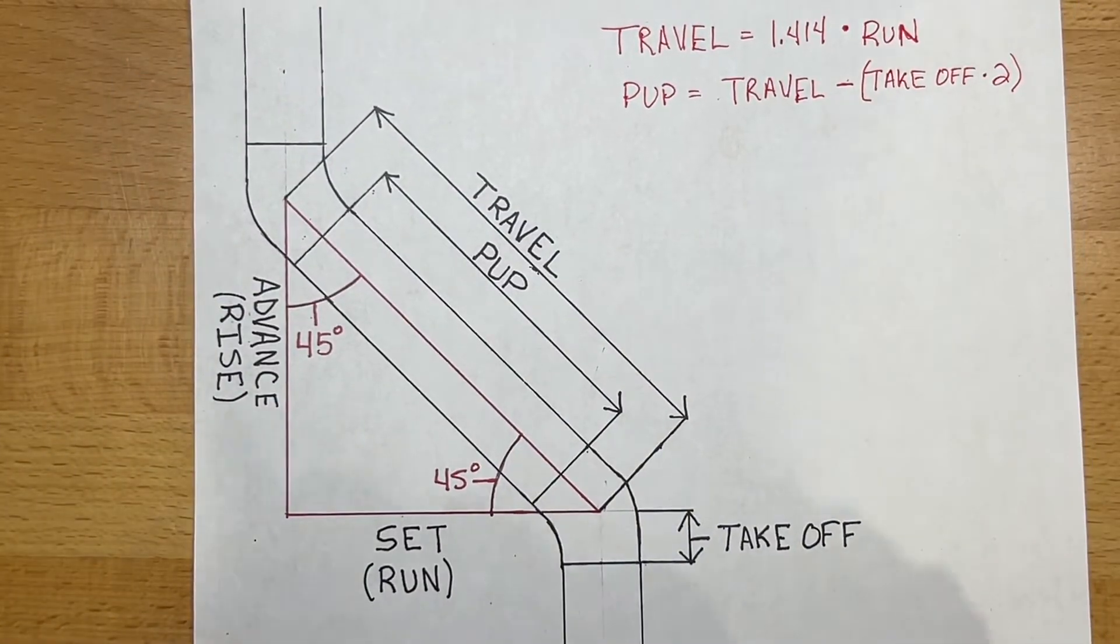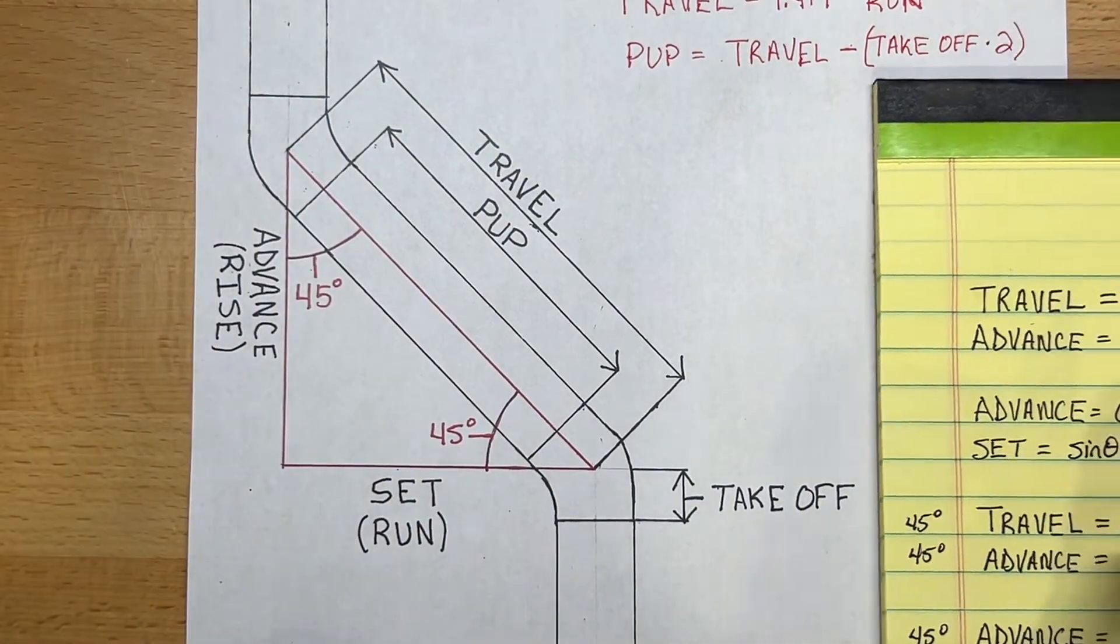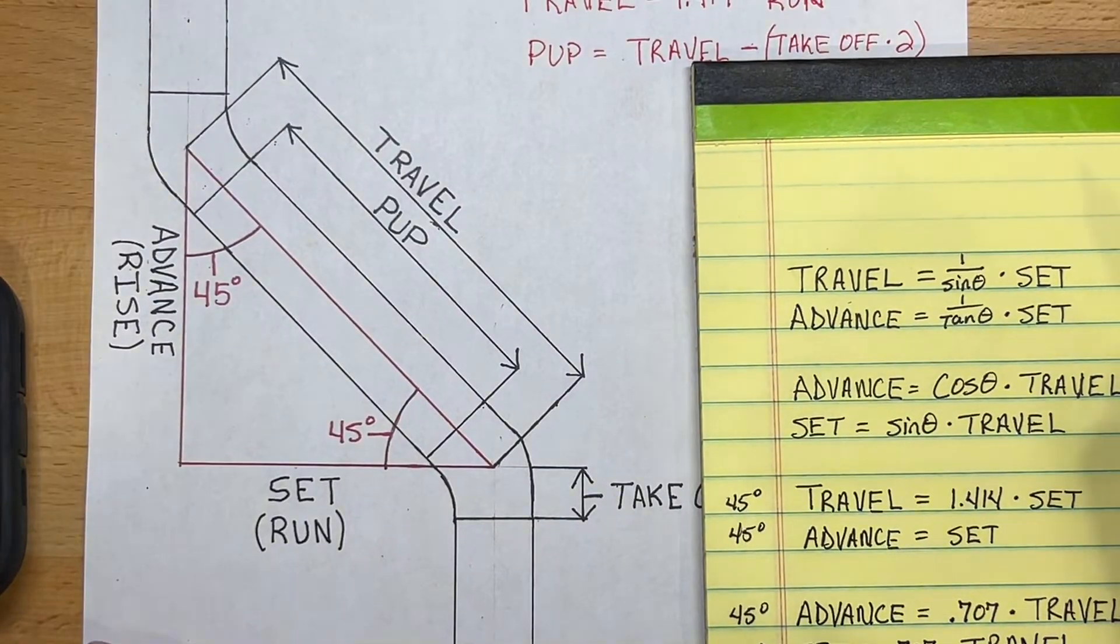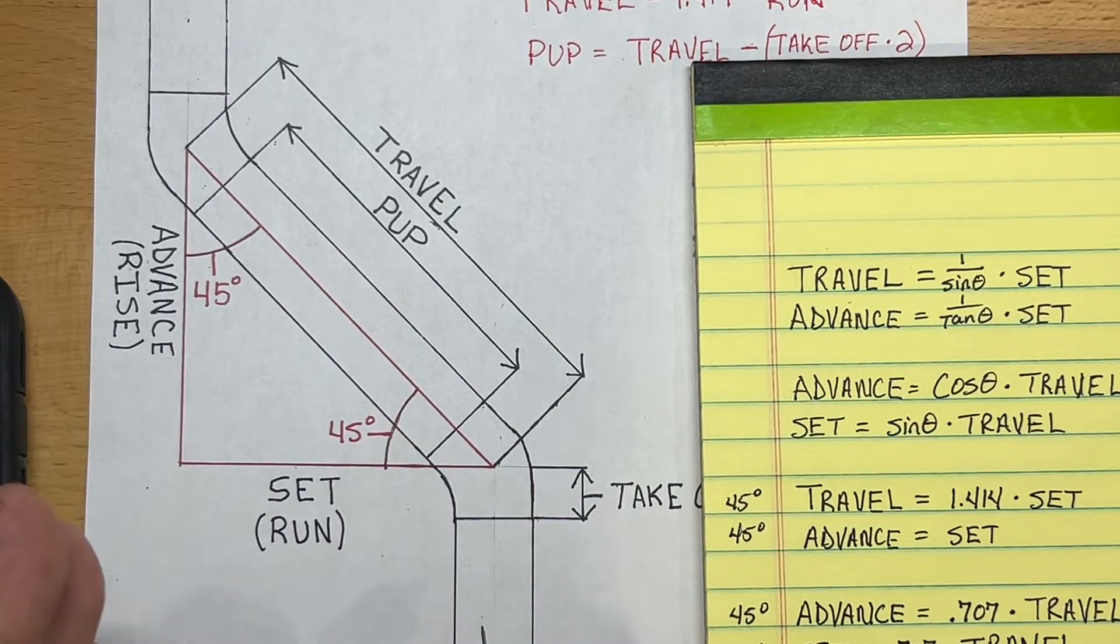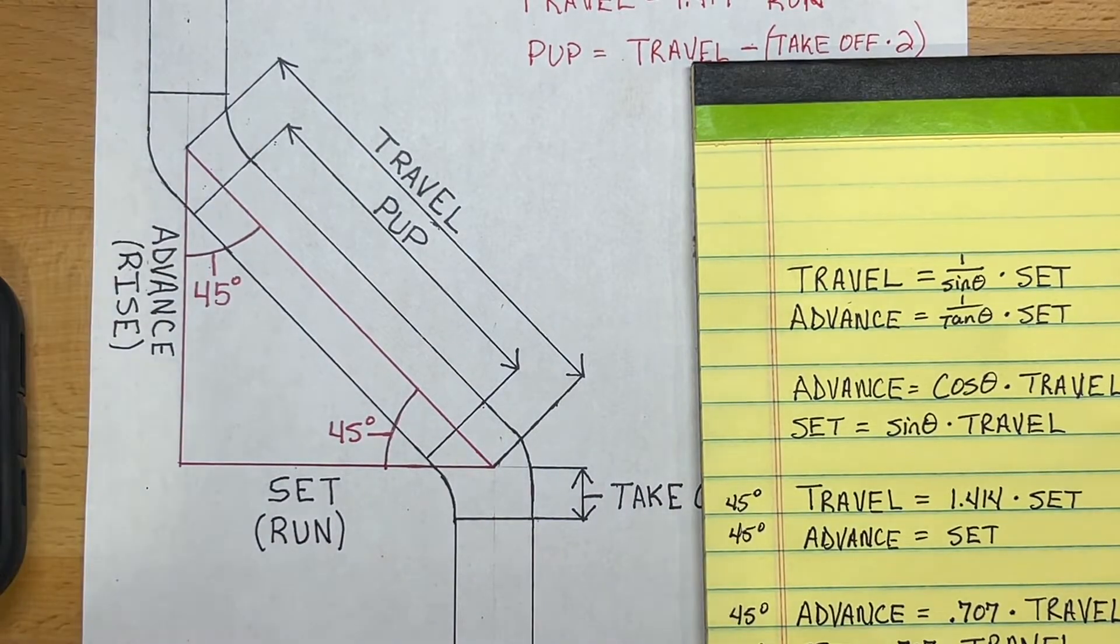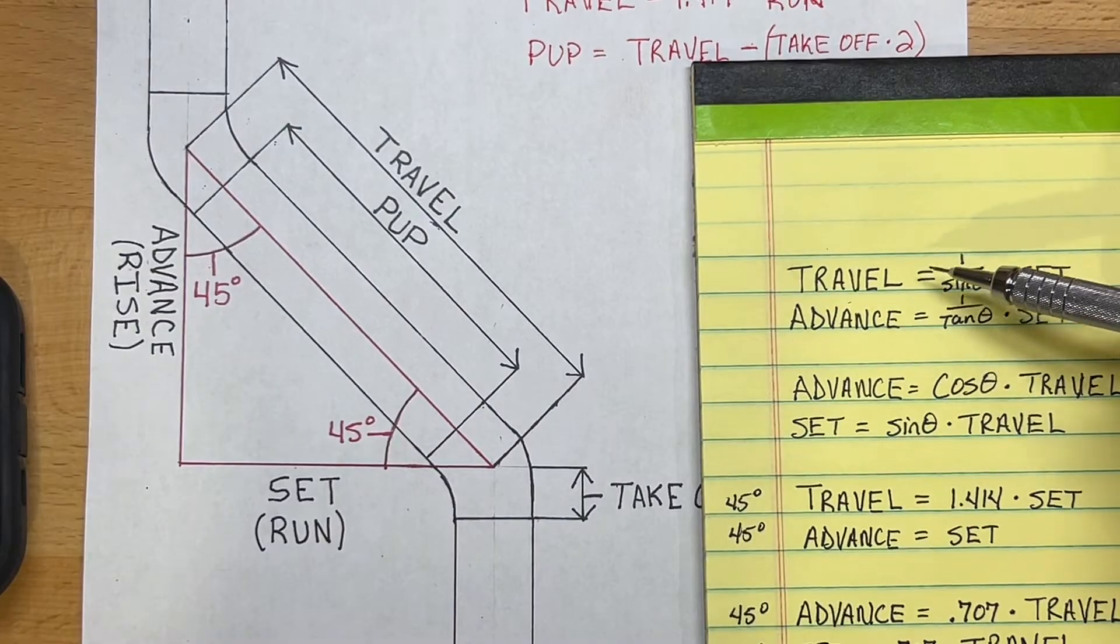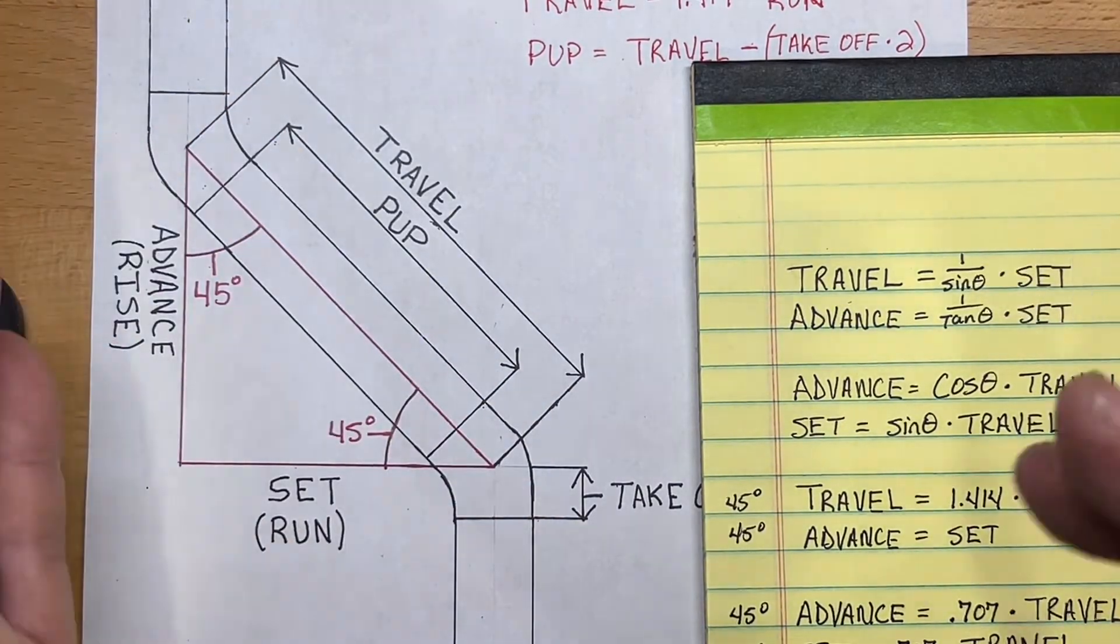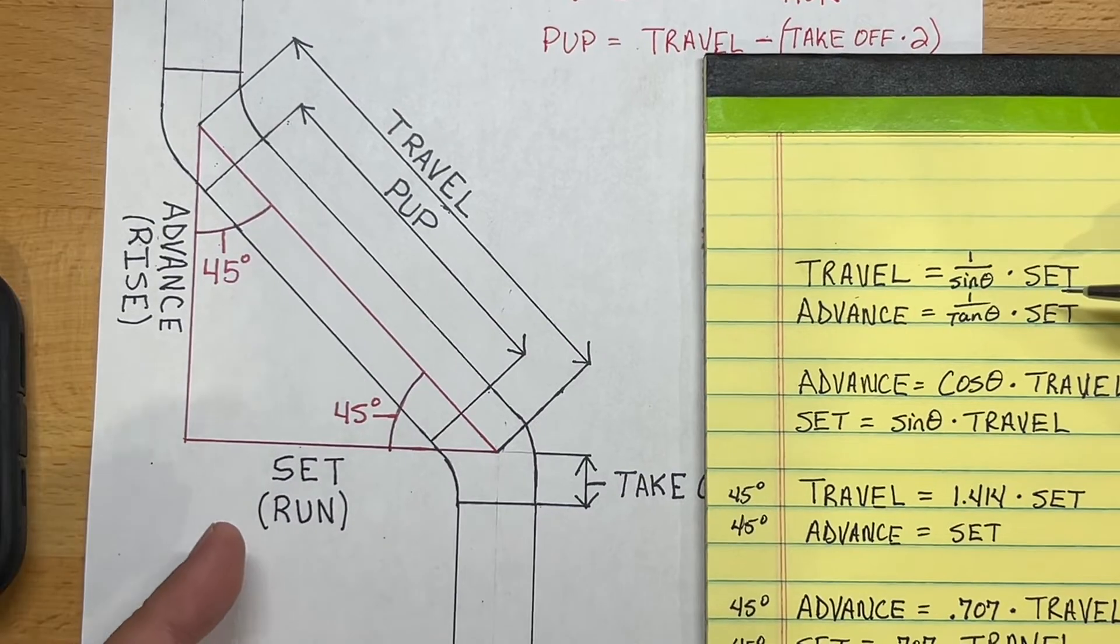Okay, so here are the formulas. If you know your set or the side to side or center line of your two pipes, then the formulas to get that for your travel, to get the travel when you know that distance, it's going to be 1 over the sine of your angle times the length of the set.